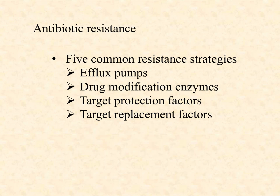We also talked about the most common way that antibiotic resistance genes are transmitted through horizontal gene transfer, and we reminded ourselves of the importance of conjugation and conjugative plasmids. What we're going to talk about now are the five most common resistance strategies. There are only four on this slide because I'm going to save the fifth one for a separate video — that'll be part three — so we can spend a little more time on that one.